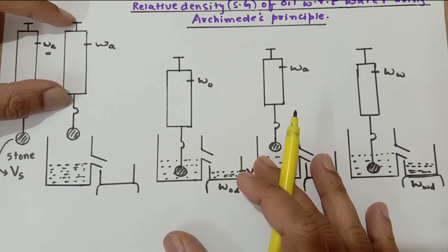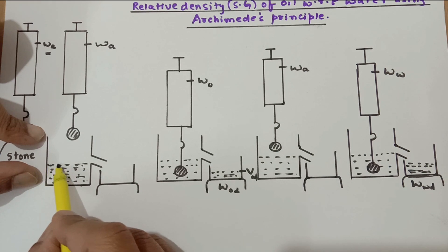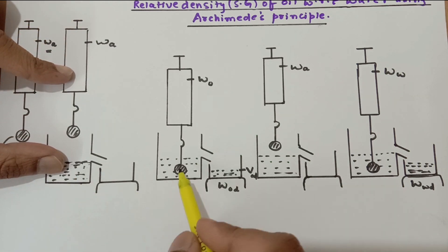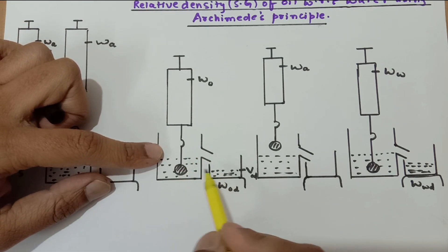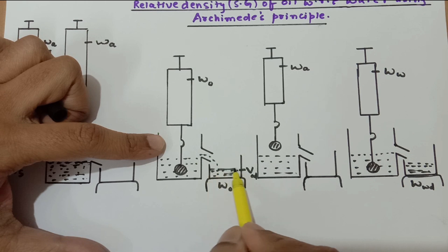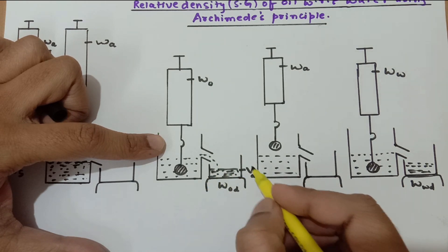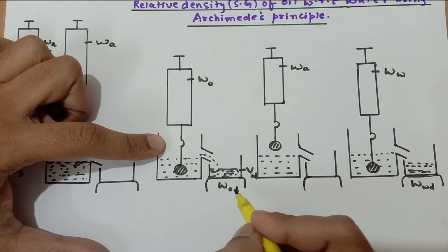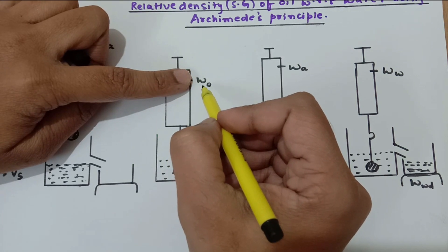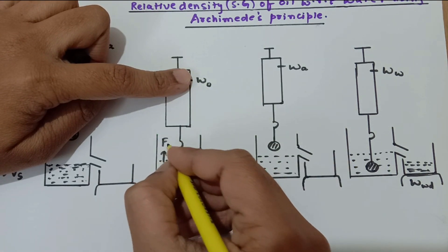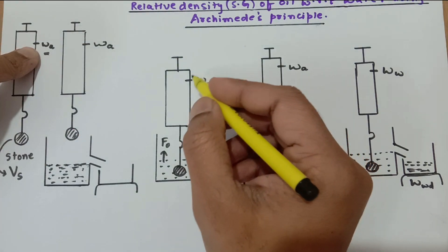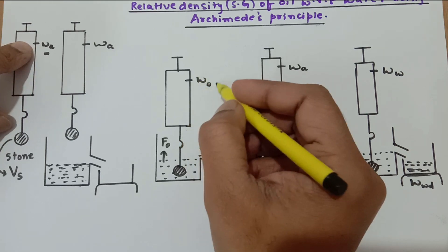Now I am going to place the spring balance with the stone over the Eureka can which contains oil, which is completely filled. Then I am going to gently lower the stone inside the oil, and you will see that as I lower the stone, some amount of oil will start displacing out. The oil which has displaced out is collected into the beaker — its volume is VOD (volume of oil displaced) and its weight is WOD. The spring balance now shows a lesser reading due to the upthrust by the oil, so WO is the apparent weight of the stone in the oil.